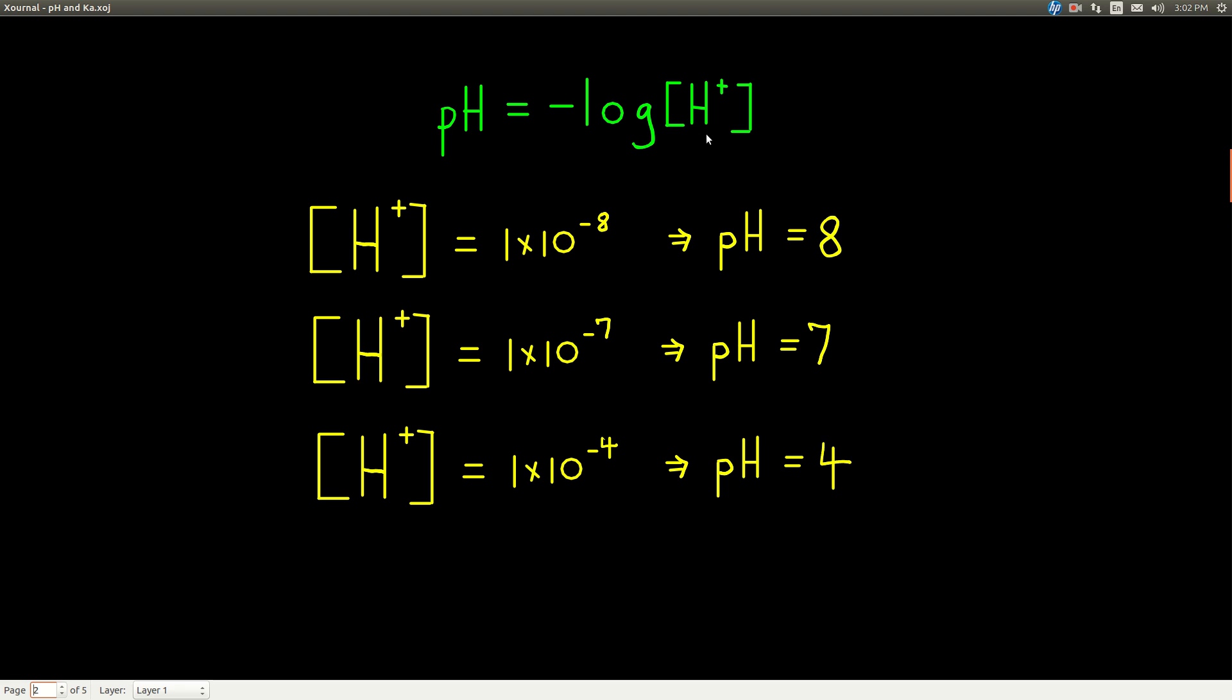But it ends up that if the concentration of hydrogen ion is 1 times 10 to some power, it's really easy to say what the pH is. It's just the negative of this number here. So if it's 1 times 10 to the minus 8th, pH is equal to 8.